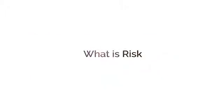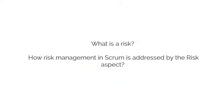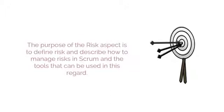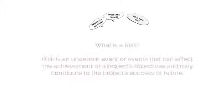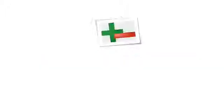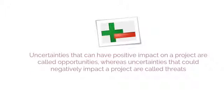Let us begin by understanding what a risk is and how risk management in Scrum is addressed by the risk aspect. The purpose of the risk aspect is to define risk and describe how to manage risks in Scrum and the tools that can be used in this regard. Risk is an uncertain event or events that can affect the achievement of a project's objectives and may contribute to the project's success or failure. Uncertainties that can have a positive impact on a project are called opportunities, whereas uncertainties that could negatively impact a project are called threats.